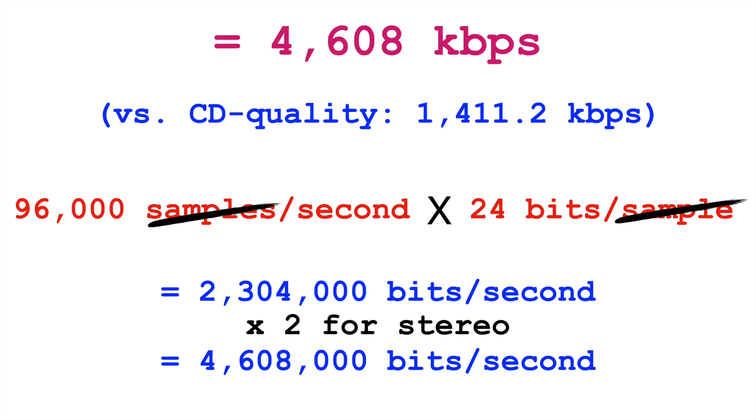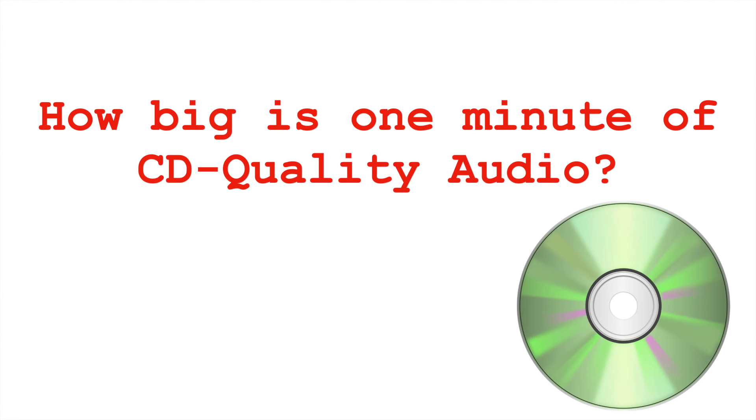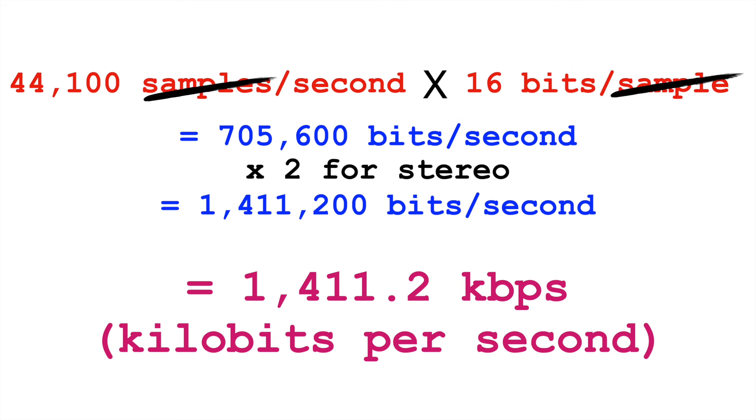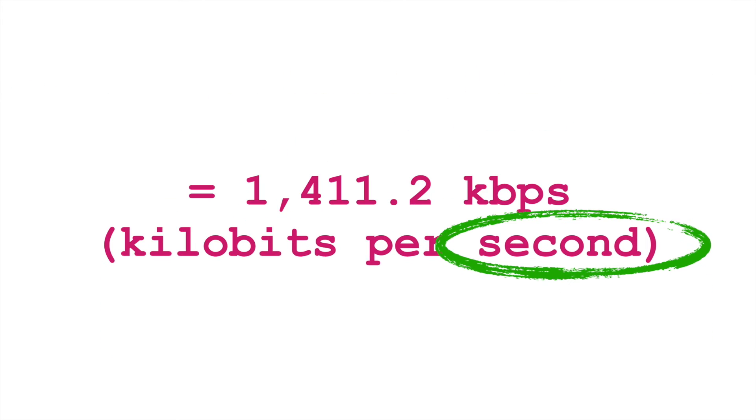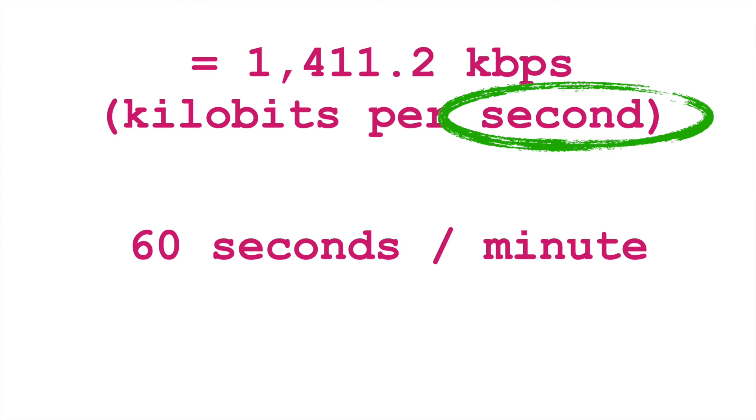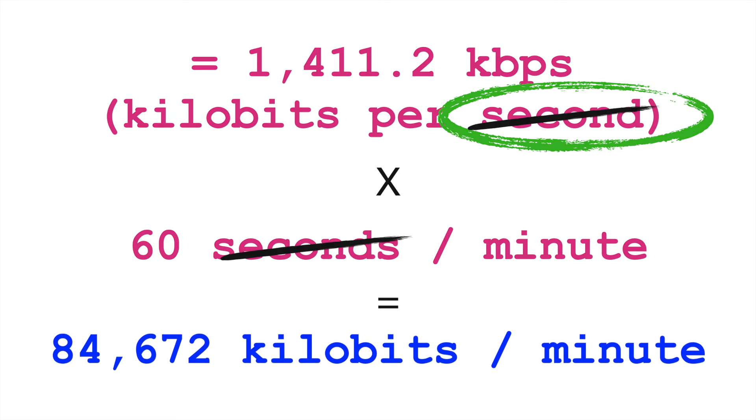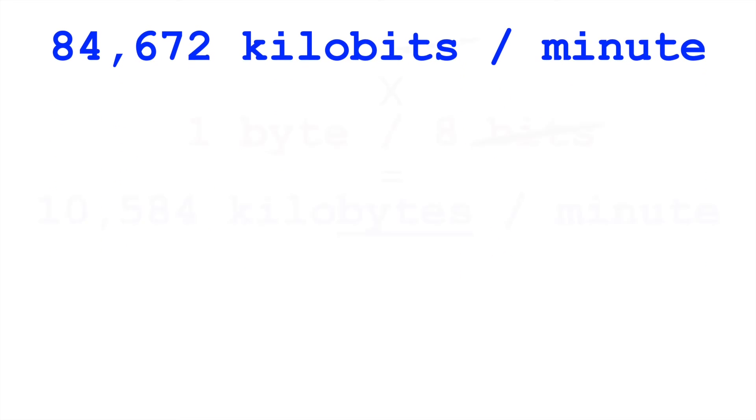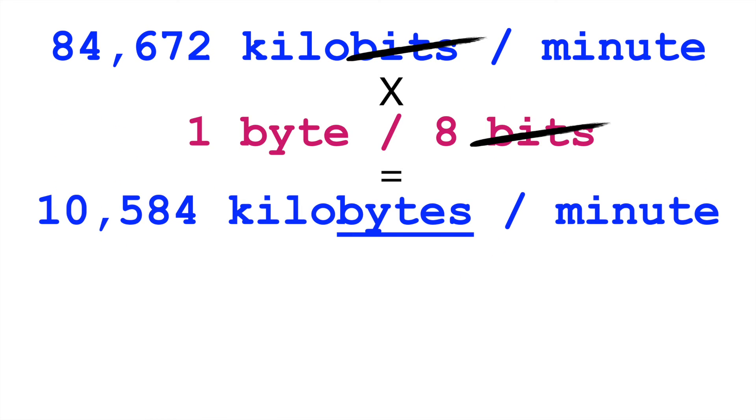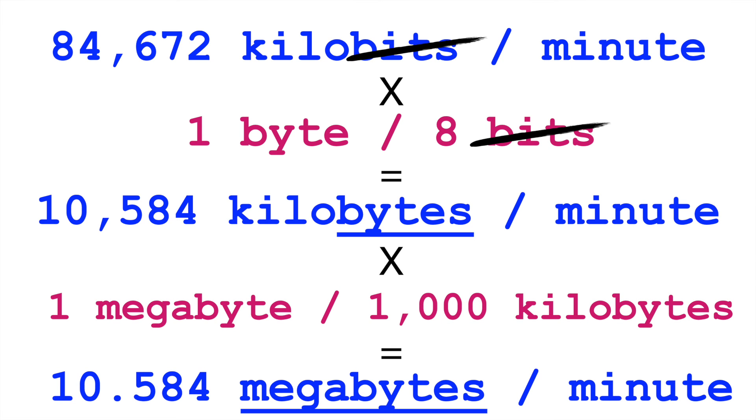So, knowing this bit rate, knowing this bandwidth, how do we figure out how big a file will be? How big is one minute of CD quality audio? Well, if we know that the bit rate is 1,411.2 kbps, s being seconds, we want to find out how many kilobits a minute is going to be. A minute is 60 seconds. 1,411.2 times 60 is 84,672 kilobits. Remember, a byte is 8 bits, so we can divide that by 8 to get the number of kilobytes. And if we want to convert this to megabytes, we can then divide it by 1,000.